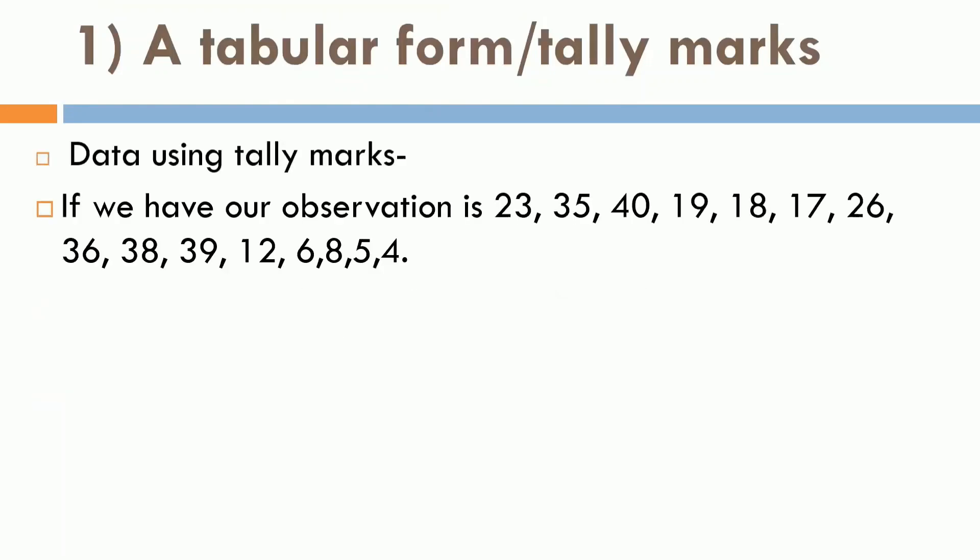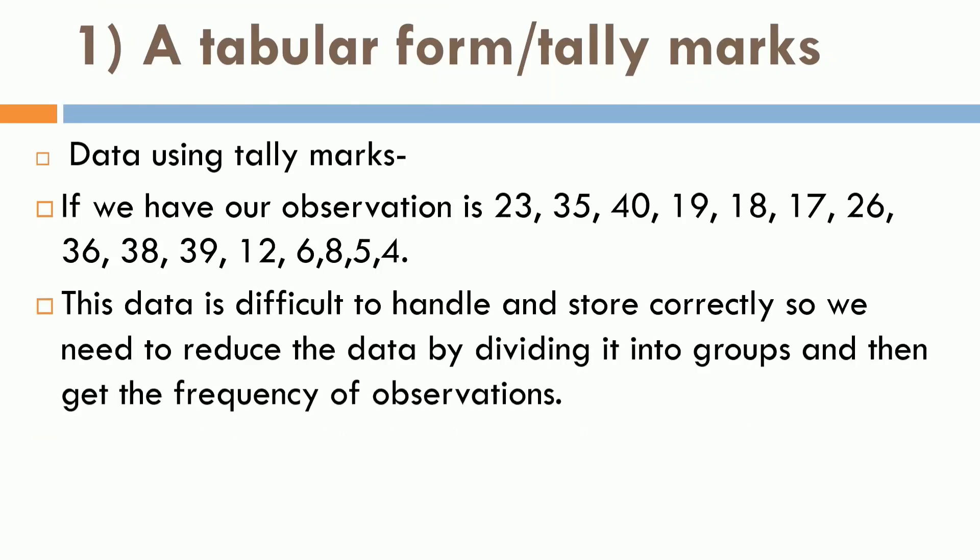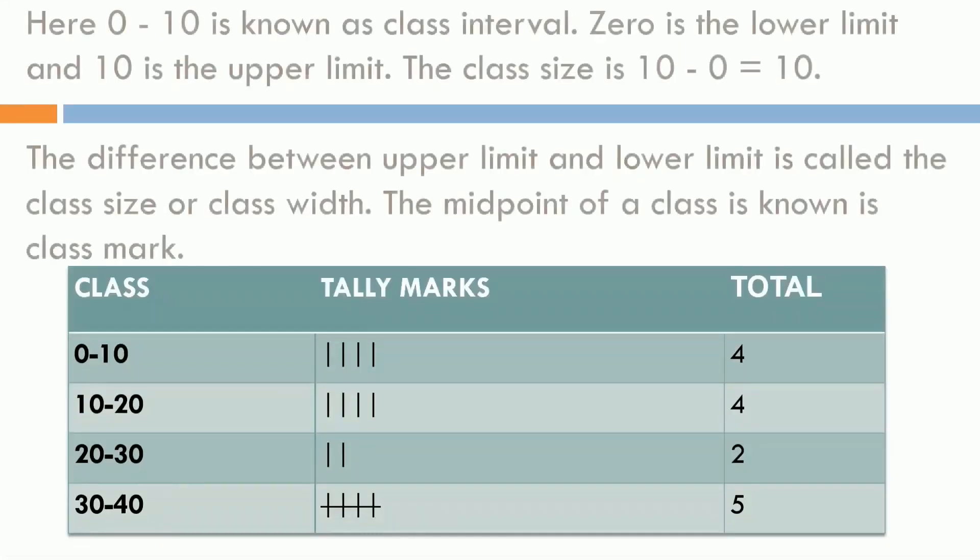Discussing first a tabular form or tally marks. If we have some observations, 23, 35, 40, 19, different numbers we have. Here you can see that this data is difficult to handle and store correctly. So, we need to reduce the data by dividing it into groups and then get the frequency of observation. What frequency is, frequency is the number of times a particular entry occurs.